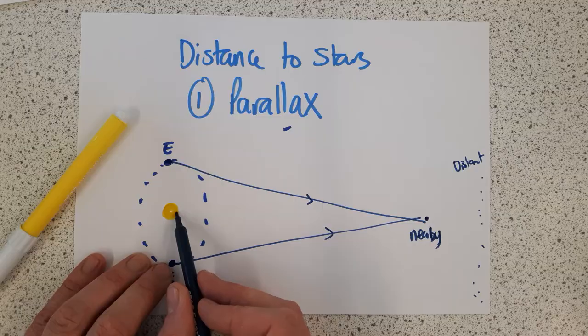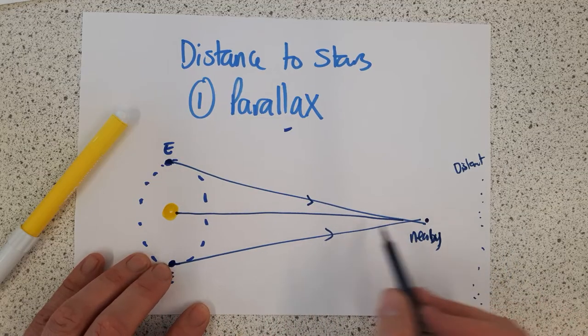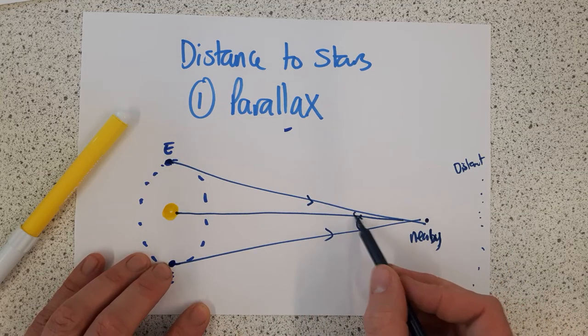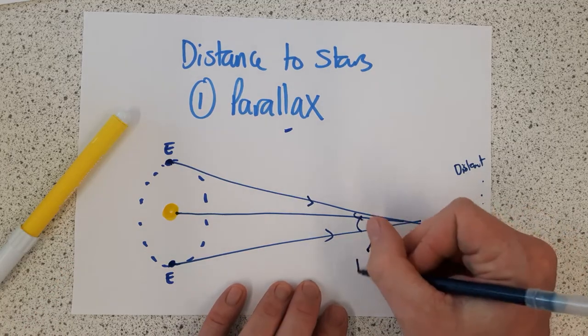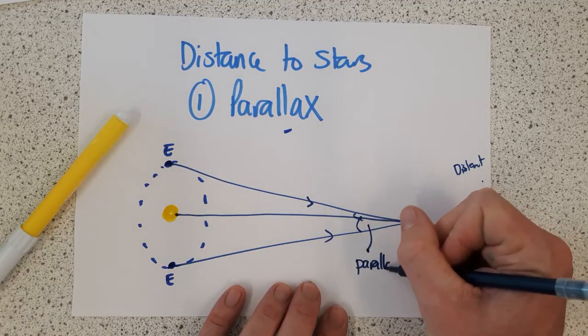If we take a line up from the Sun, like that, it's totally drawn, we should have two equal angles here. This single angle here is known as the parallax angle.